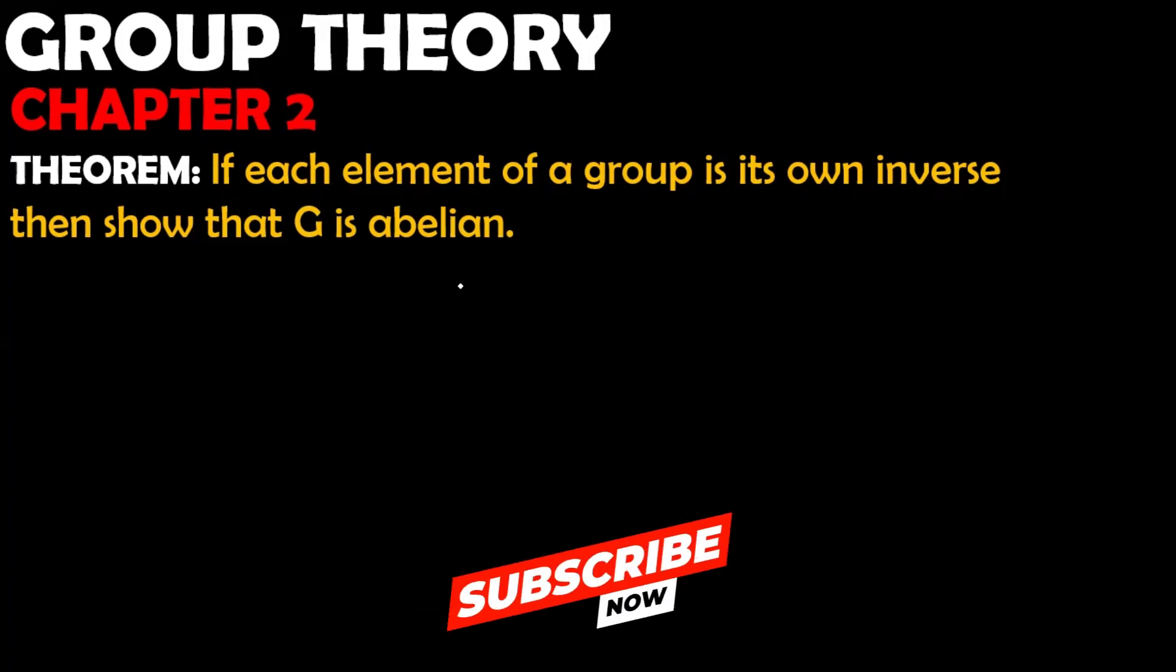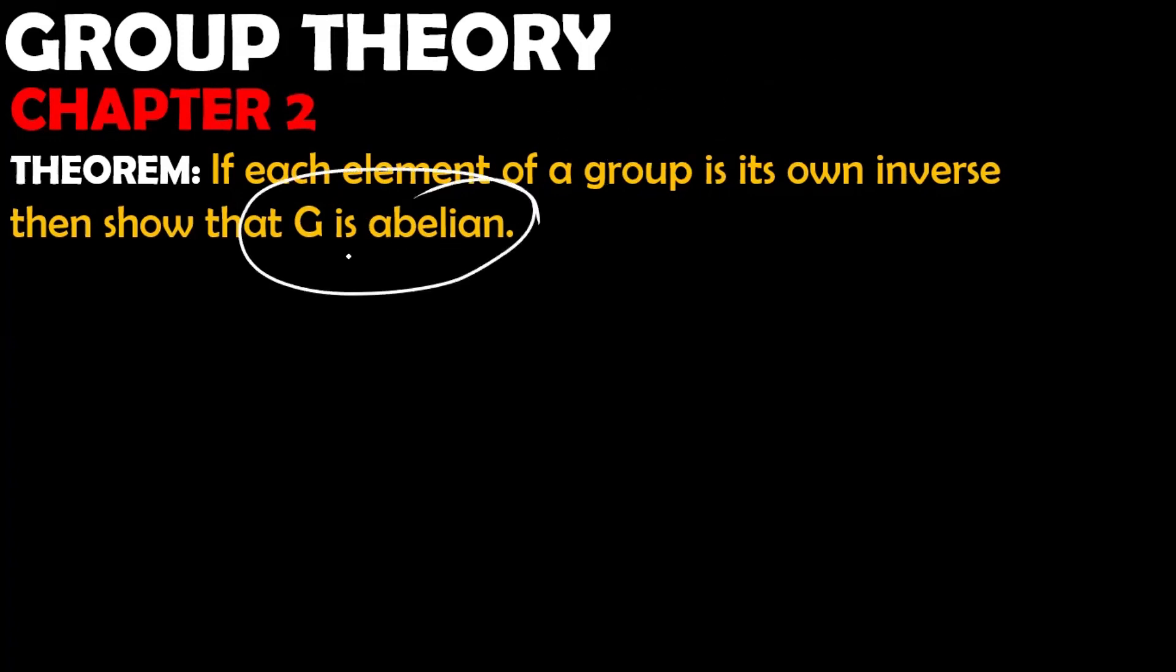This means that the group's every element is its own inverse. It means that G is abelian. Does this group exist as a group which has every element as its own inverse?